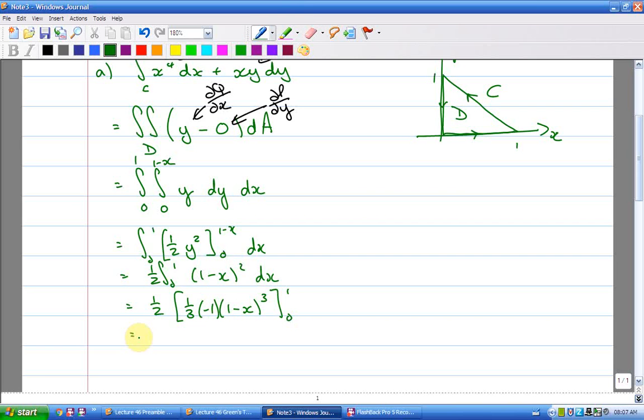If I differentiate that I'd bring the 3 down, minus 1. That's correct. That minus a sixth. Plug in the 1. Plug in the 0. 1 over 6. There's my answer 1 over 6.